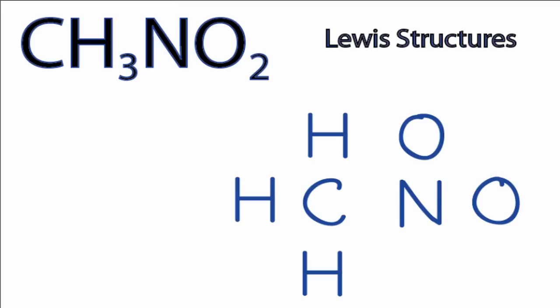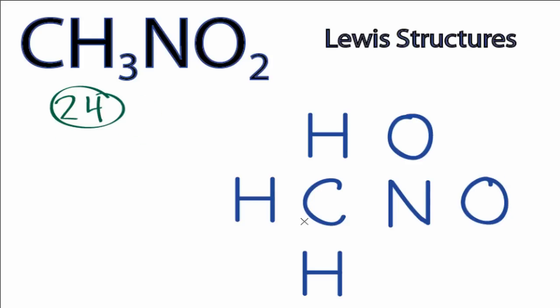For the CH3NO2 Lewis structure, we have a total of 24 valence electrons. We'll form bonds between atoms, and each one of these bonds represents two electrons. We've used 12 valence electrons, and then we'll go around the outside of the oxygens to fill their octets.